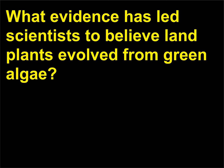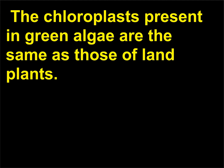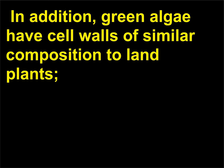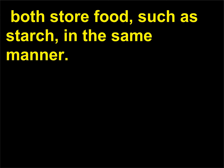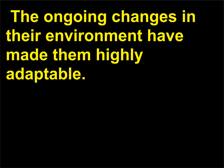What evidence has led scientists to believe land plants evolved from green algae? Many scientists believe that ancient green algae evolved into land plants. The chloroplasts present in green algae are the same as those of land plants. In addition, green algae have cell walls of similar composition to land plants, and both store food, such as starch, in the same manner. Most green algae live in freshwater habitats with highly variable conditions, and the ongoing changes in their environment have made them highly adaptable.